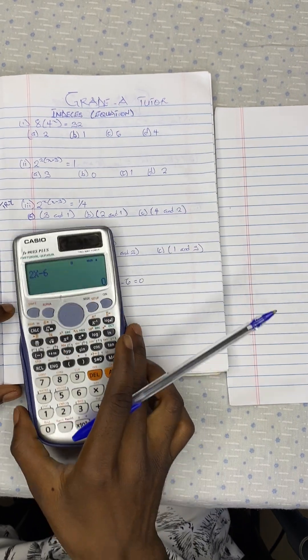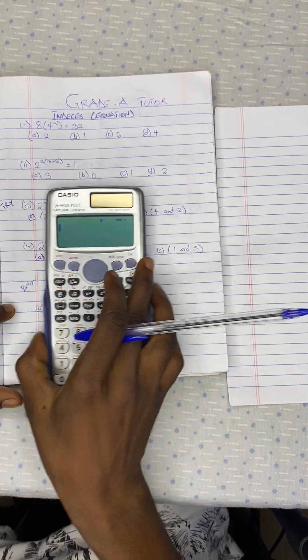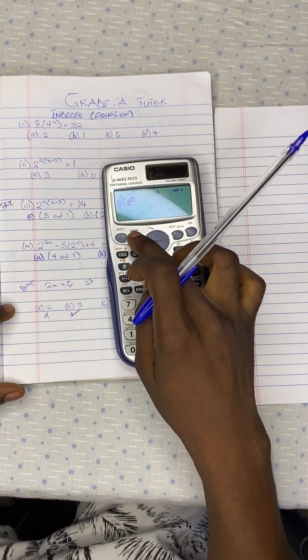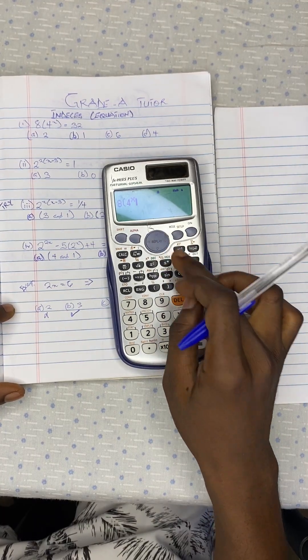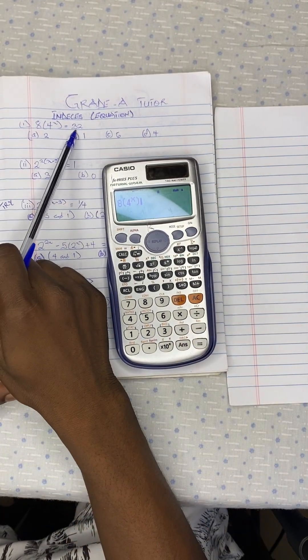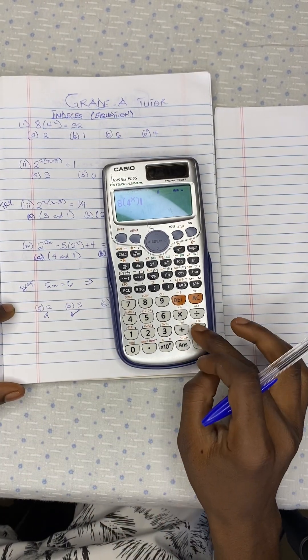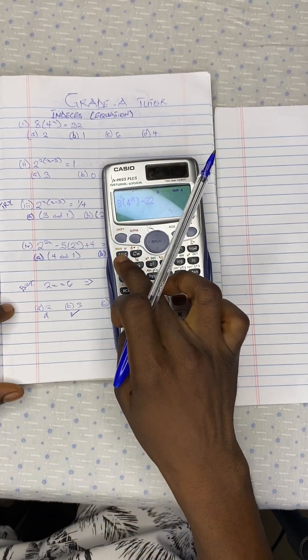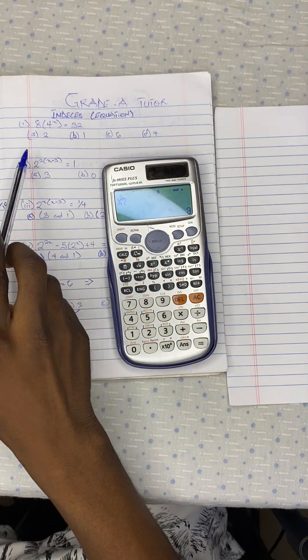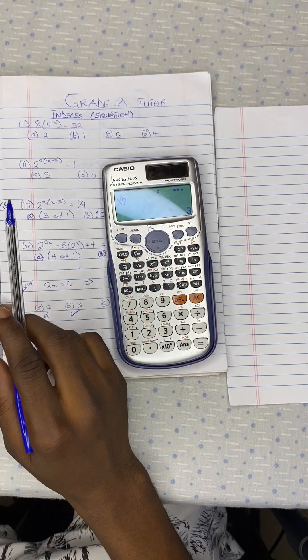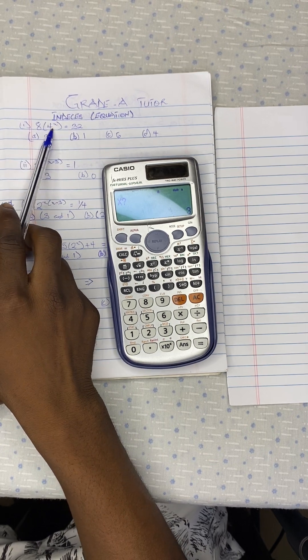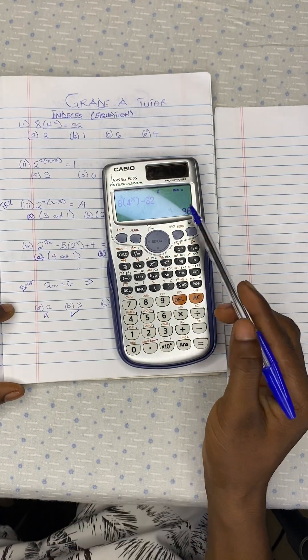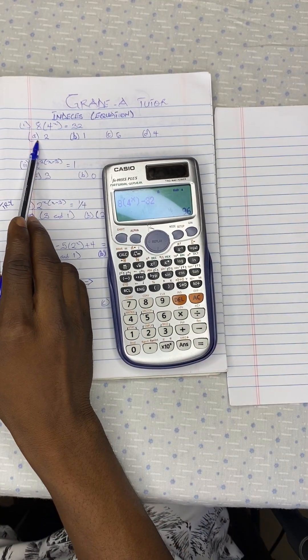For the first question, let's input the question, which is 8 into bracket 4 exponent x. Then there is positive 32. So when it crosses, it becomes negative 32. So you press on this key. Now they are asking for the value of x. The first option is 2. So let's press on 2, equal to. The answer is 96. So it means the first option is wrong.